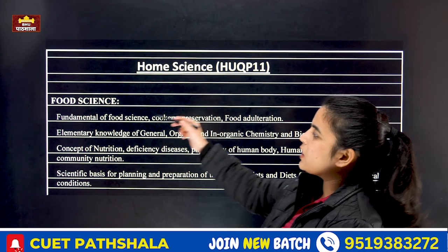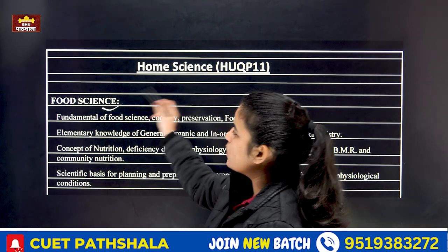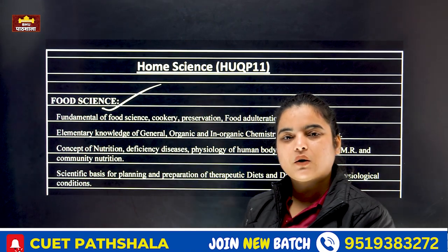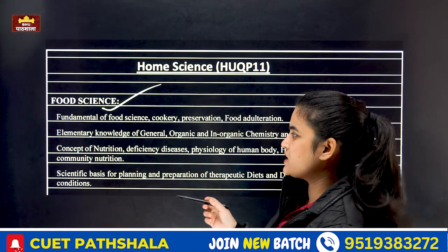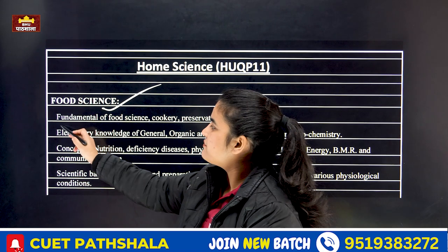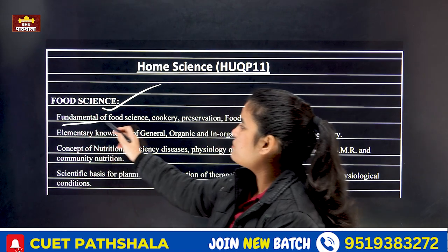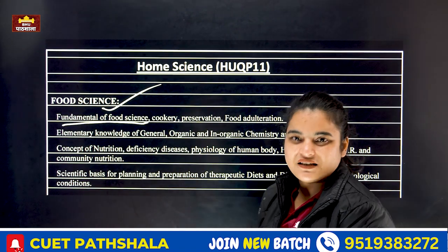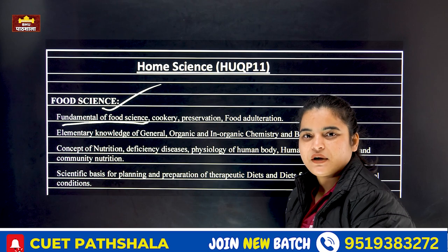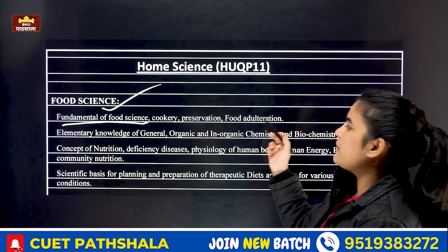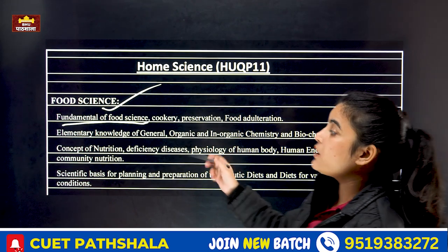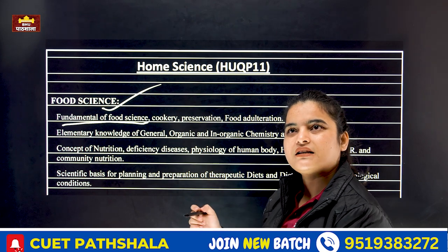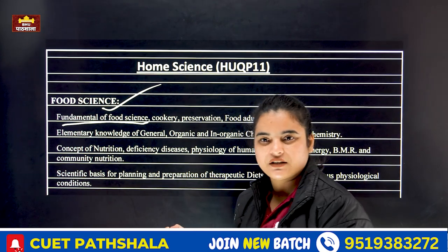Our first unit is Food Science. Home science begins with food science, in which we will study the fundamentals of food science. We will study balanced diet, dietary guides, and the concept of nutrition, including diet etiquette and balanced diet planning.